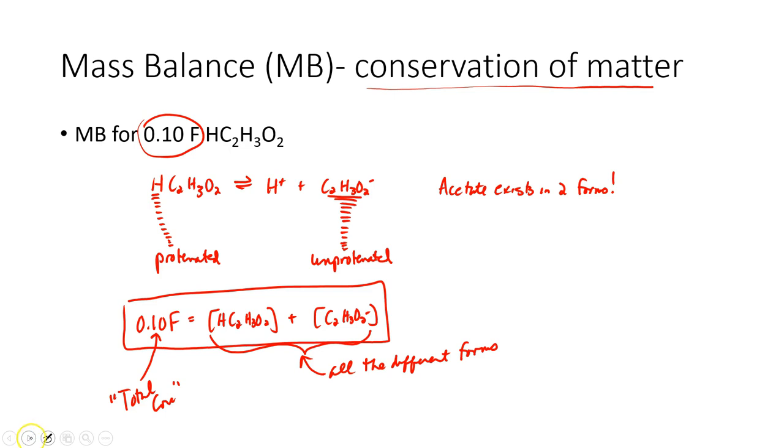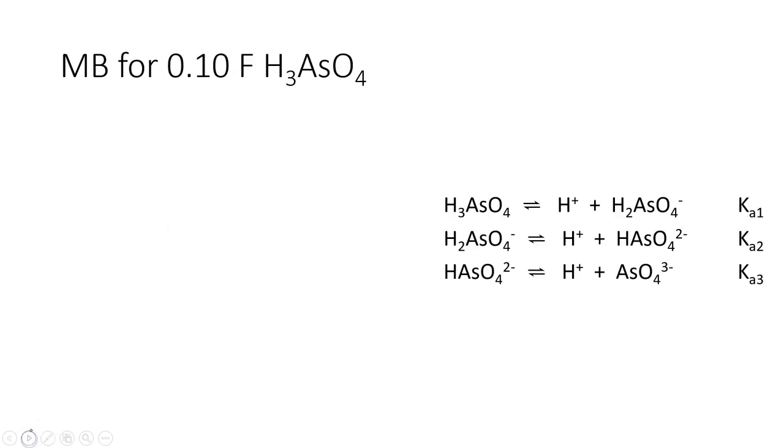Let's see if we can try another one. We're back to arsenic acid. They want us to write a mass balance for a 0.1 formal solution. And it was nice of them to show us the behavior of arsenic acid in water. So, this formal concentration has got to equal the sum of all the different forms in which arsenic acid can exist.